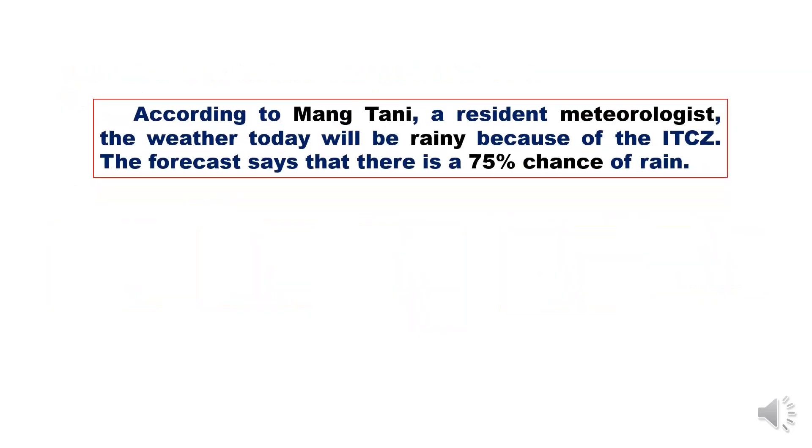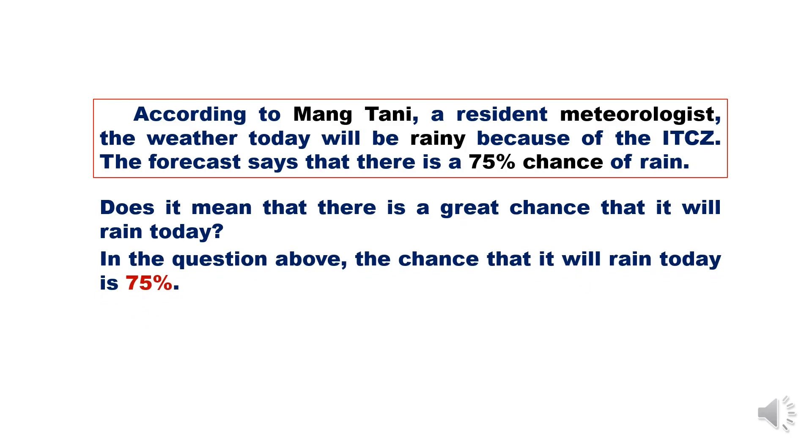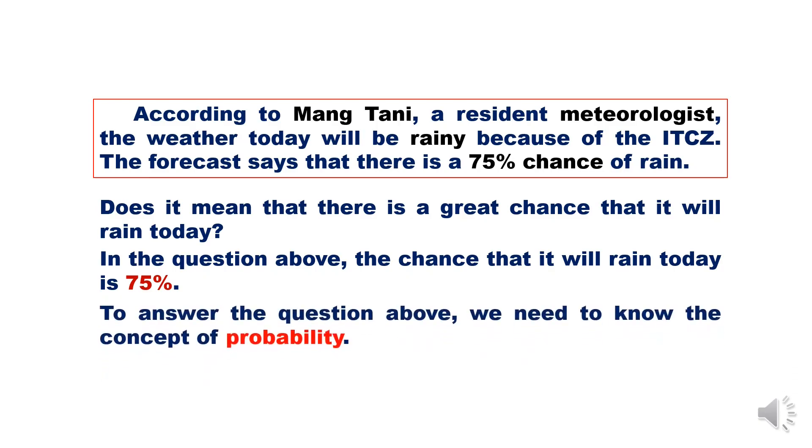According to Mang Tani, a resident meteorologist, the weather today will be rainy because of the ITCZ. The forecast says that there is a 75% chance of rain. Does it mean that there is a great chance that it will rain today? In the question above, the chance that it will rain today is 75%. To answer the question above, we need to know the concept of probability.